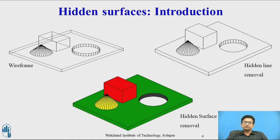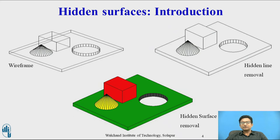In the wire frame image, 3D objects are drawn without removing any lines. It is very difficult to identify which is the visible part of the object and which is the hidden part. It is very difficult to identify which object is above and which object is below. When you remove the hidden line, as shown in the second image, you can identify which object is above and which is below.